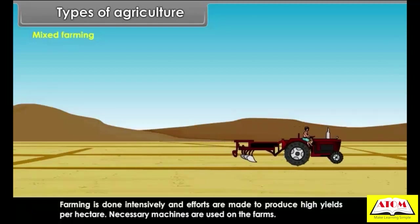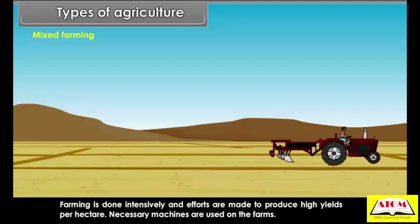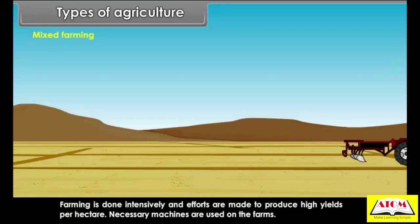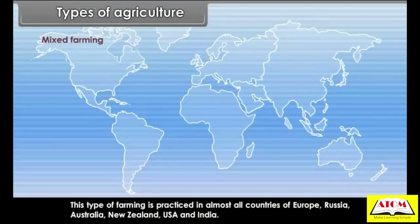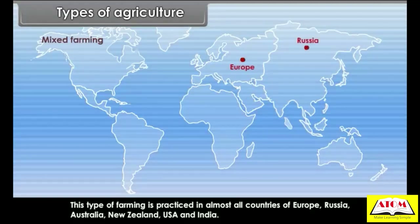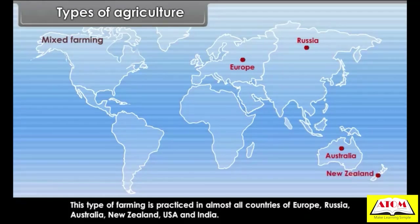Necessary machines are used on the farms. This type of farming is practiced in almost all countries of Europe, Russia, Australia, New Zealand, USA and India.